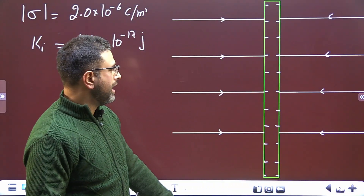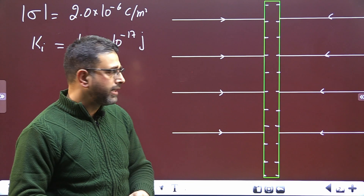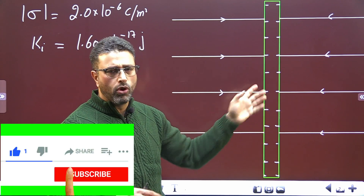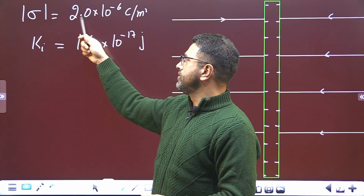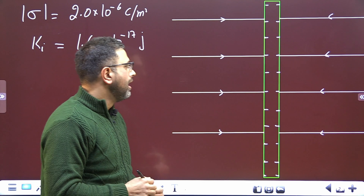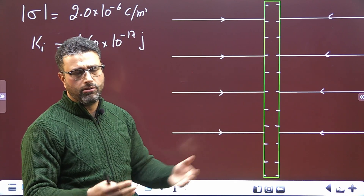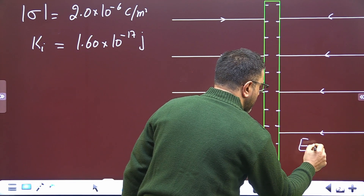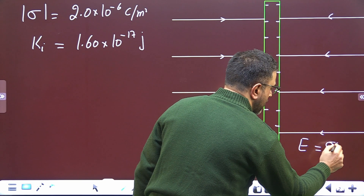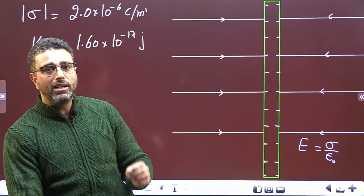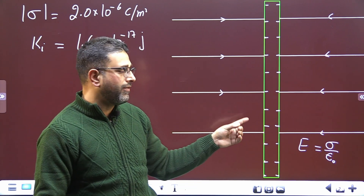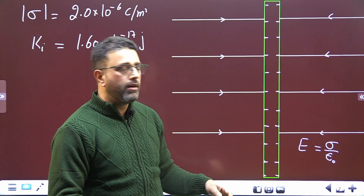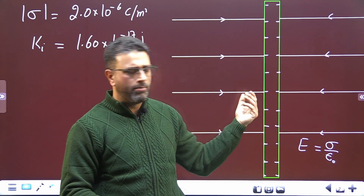We have a large metallic plate, so we will consider it to be infinite. This infinite metallic plate is charged, so both surfaces are charged with the same charge density — magnitude 2.0 × 10⁻⁶ coulombs per meter squared. The electric field due to this infinite metallic plate is σ/ε₀. For a single non-conducting sheet it was σ/(2ε₀), but here we have two surfaces, so the field doubles to σ/ε₀.